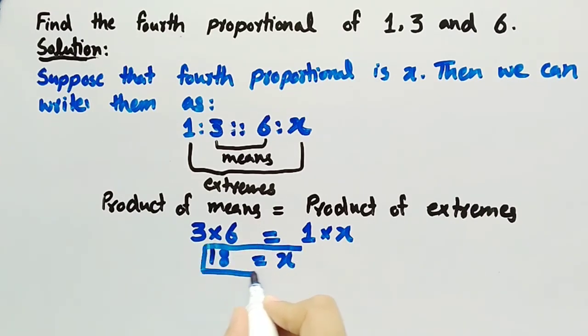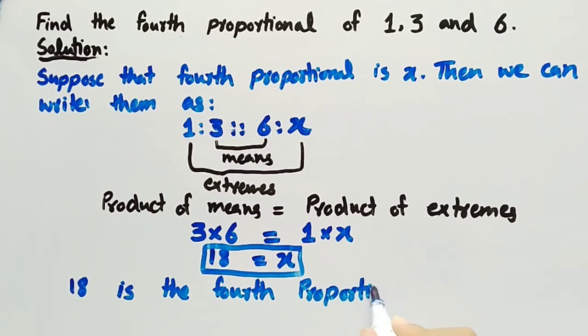So the value of X is equal to 18. Since we have found the value of X, we can write that 18 is the fourth proportional of 1, 3 and 6.